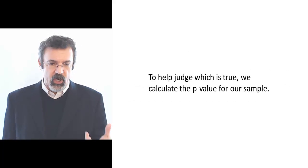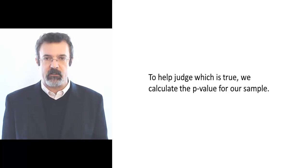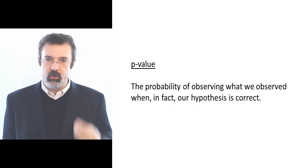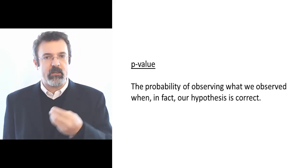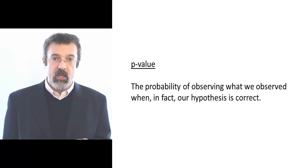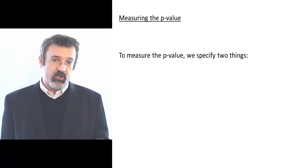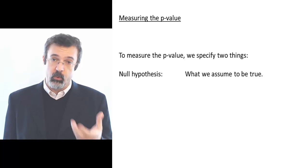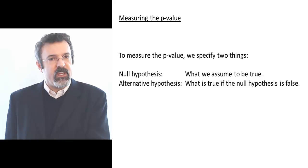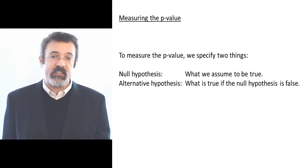To help us judge which of these two alternatives is more likely, we use a p-value. The p-value measures the probability of observing what we observed, assuming that our hypothesis is indeed correct. To measure the p-value we need two things: our null hypothesis — the thing we're assuming to be true — and an alternative hypothesis — the thing that will be true if our null hypothesis is false.